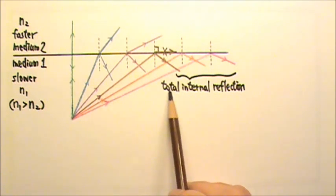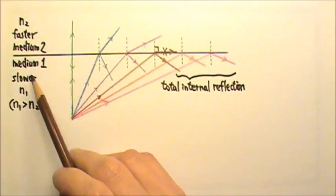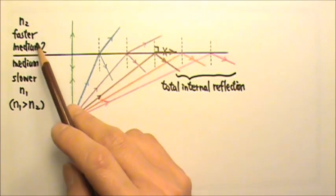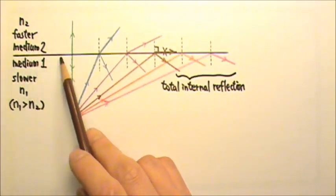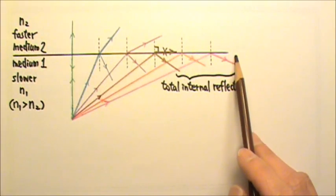There's something special called total internal reflection when light goes from a slower medium to a faster one. Here we have the two media. The line here is the interface between the two.